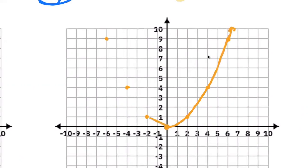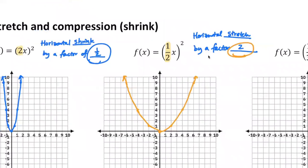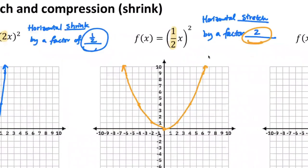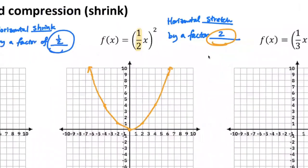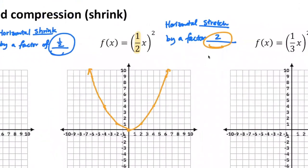Now another thing I want to emphasize — words do carry meanings. It is quite unacceptable if you say it's a horizontal stretch but somehow the graph is not stretched. If it's a horizontal stretch, it should look stretched horizontally. It would not make sense to say it's a horizontal stretch but then present a graph that doesn't show that. Even in a math class, words carry meaning — make sure whatever you're graphing matches the meaning of the words.